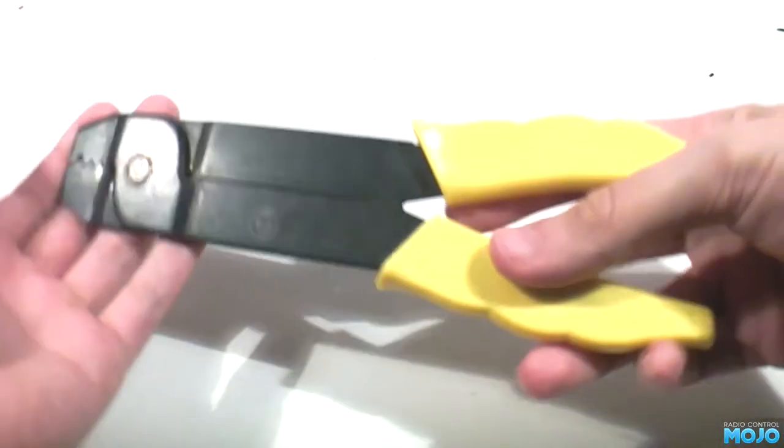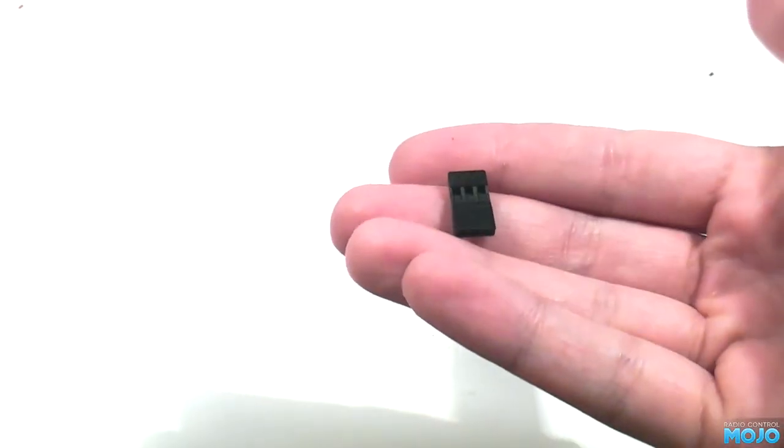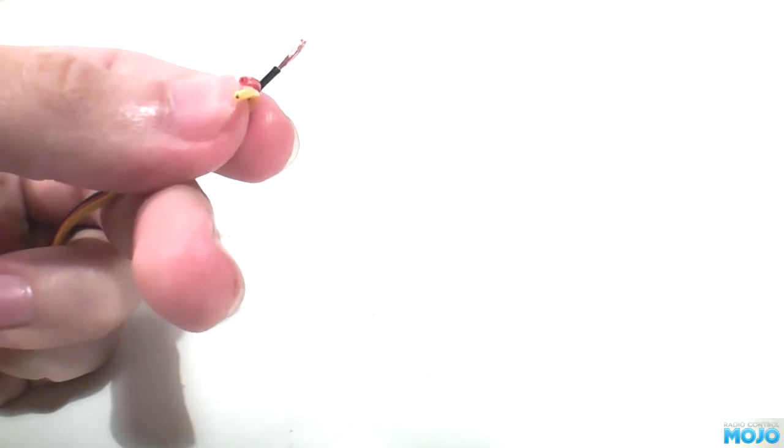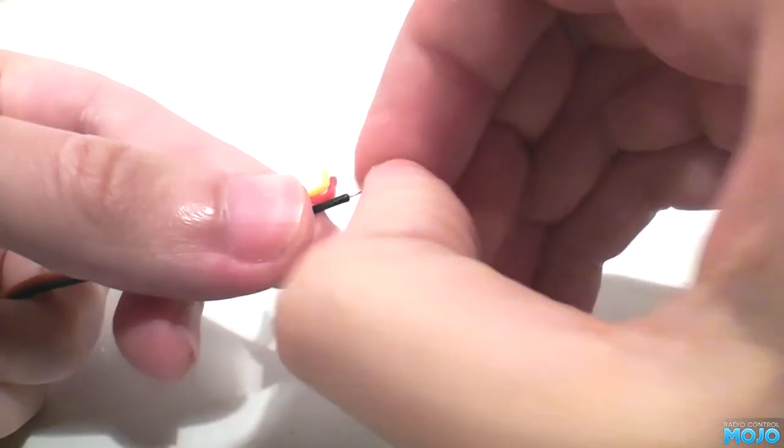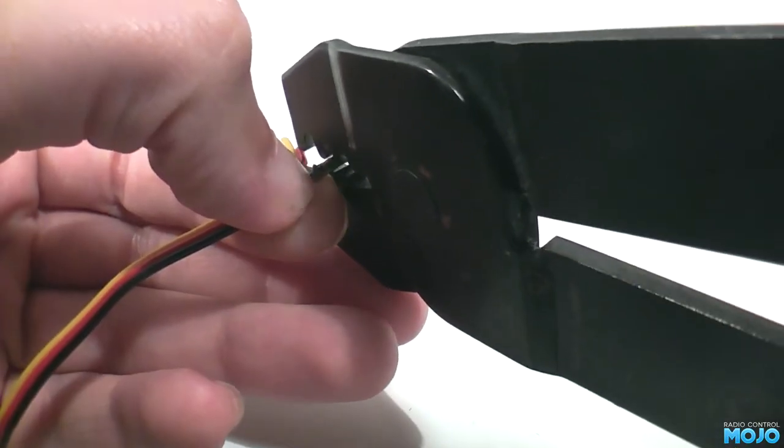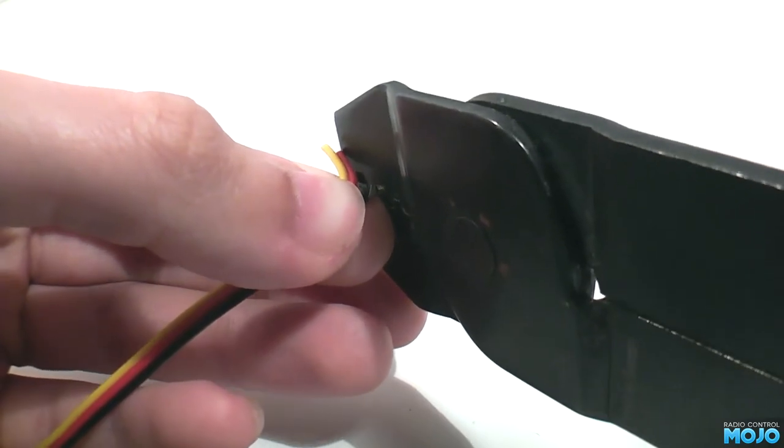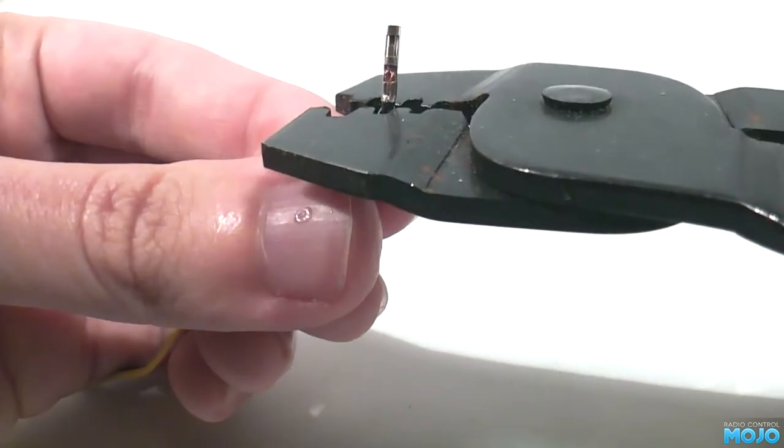Now, for this bit we'll need a crimp tool, terminals, and housing. Start by stripping one of the wires about 5 or 6mm, then fold the exposed wire in half. This is to give the crimp something to grip. Place the wire in the terminal and crimp it. Pop it in the housing, repeat for the other two wires, and there you have it.